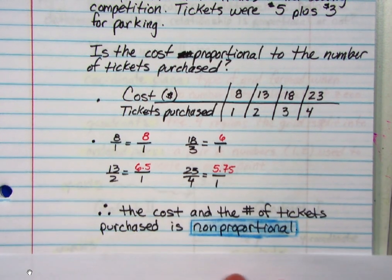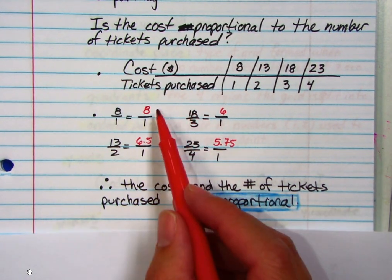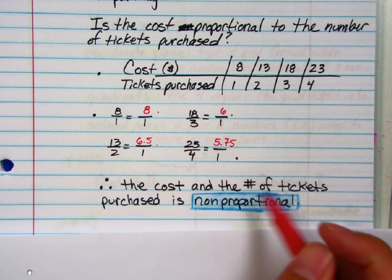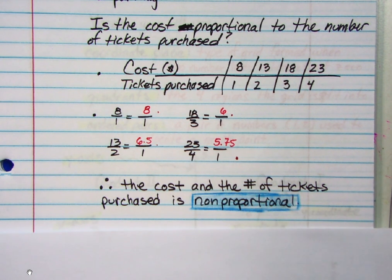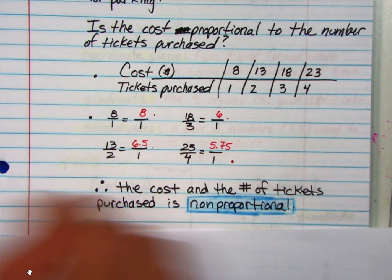So you can notice that because all of the costs, or therefore, because you can see that all the unit rates are different, we could say that the cost and the number of tickets purchased is non-proportional. So now you know the difference between non-proportional and proportional problems.